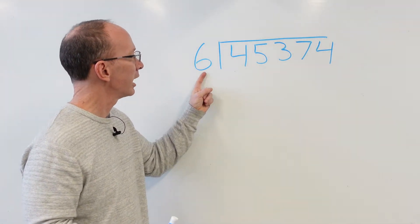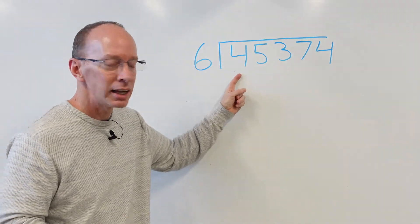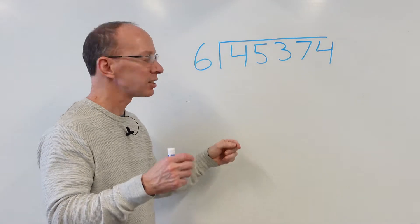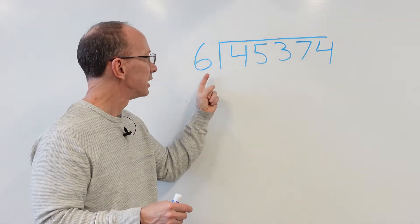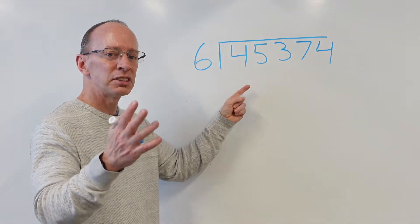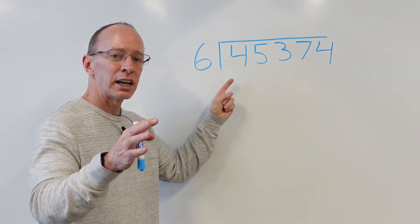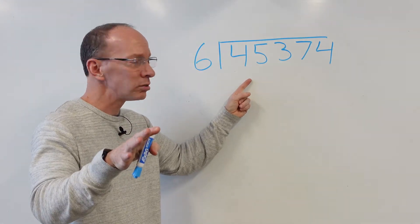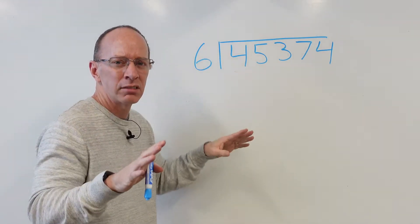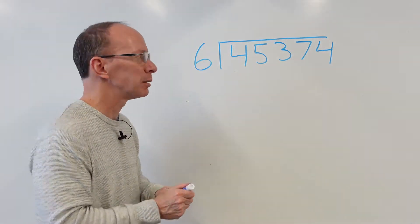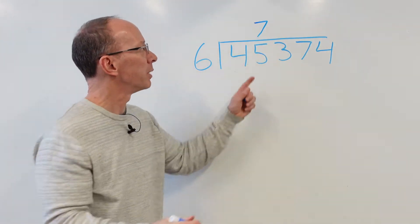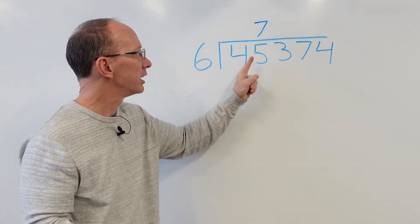First of all, can I put 6 into 4? No, you cannot. Can I put 6 into 45? I think you can. So let's throw out a couple of multiplication facts. 6 times 4 is 24. 6 times 5 is 30. 6 times 6 is 36. 6 times 7 is 42. 6 times 8 is 48 — too high. Let's stick with 6 times 7. Put the 7 right here. Please make sure you line up your numbers — very important.